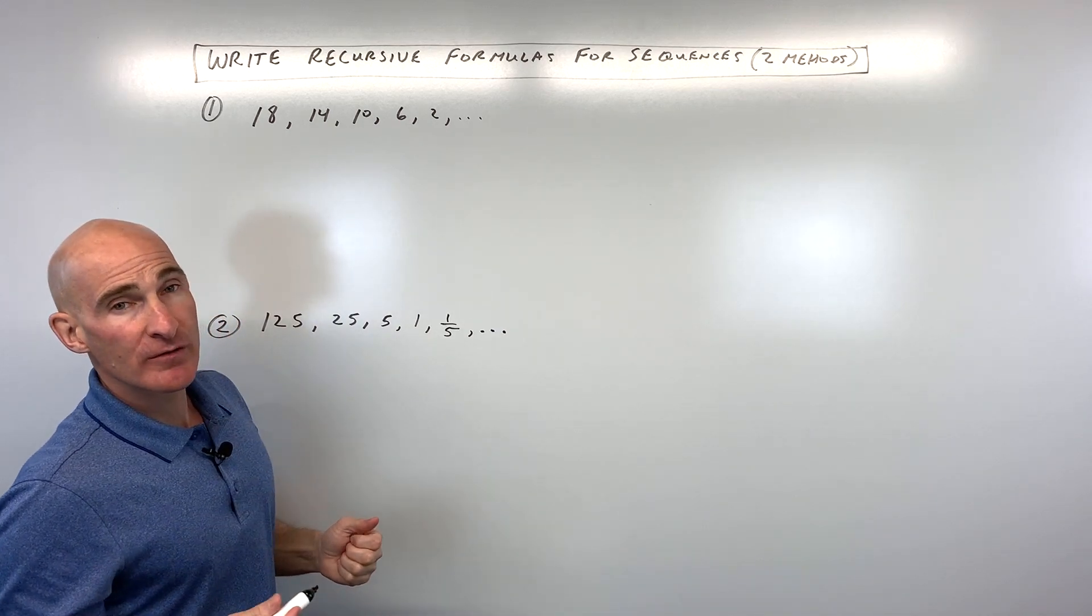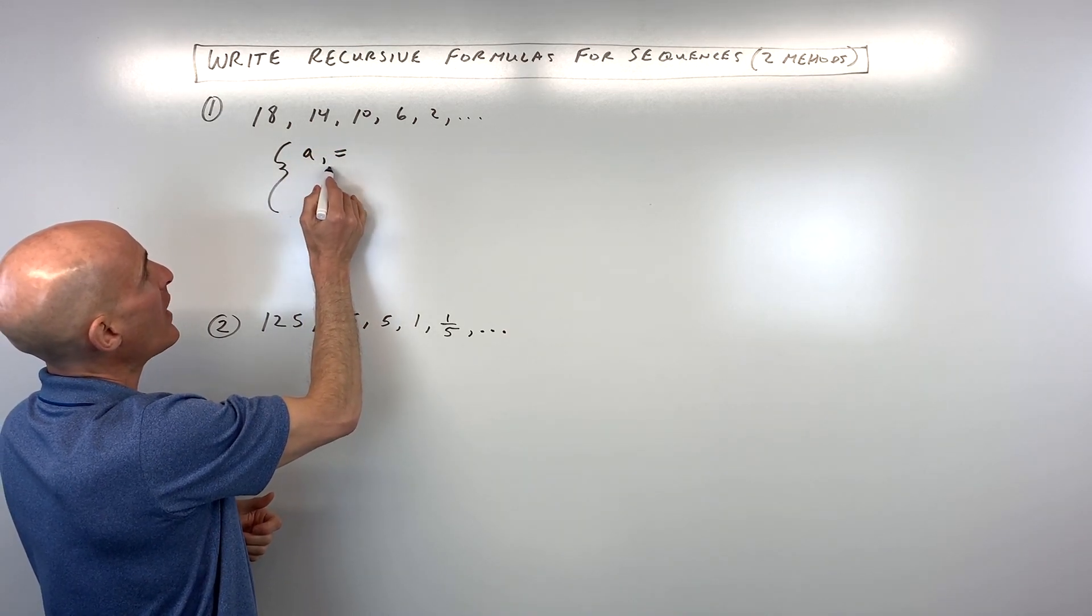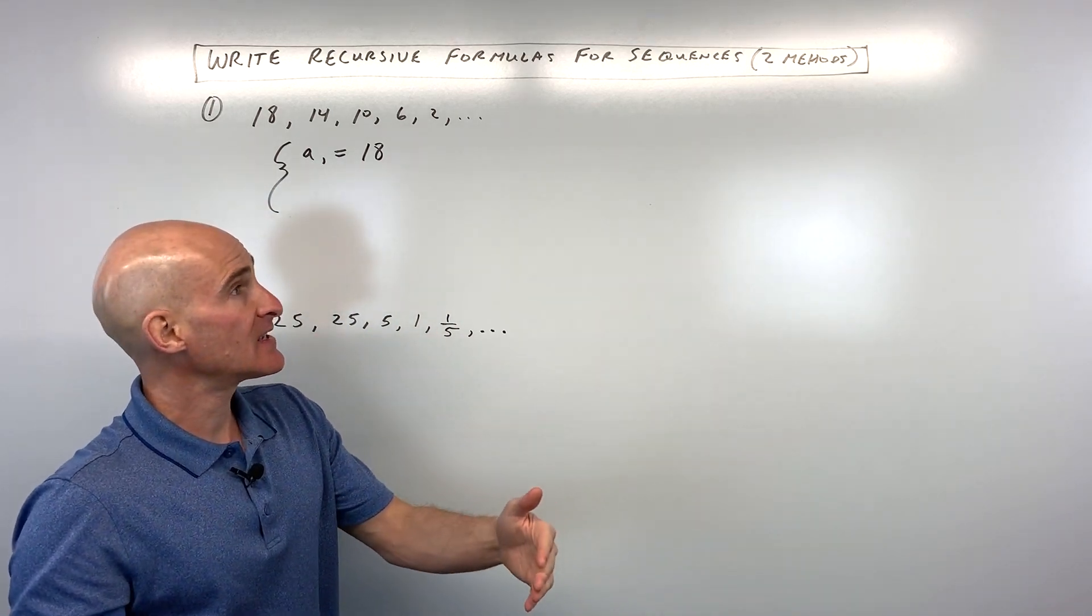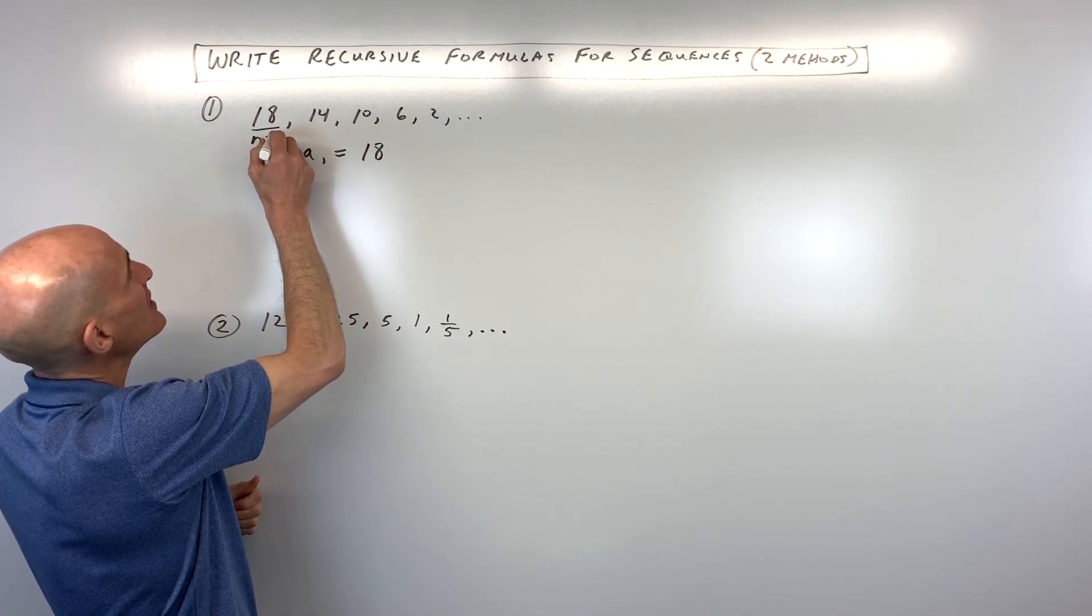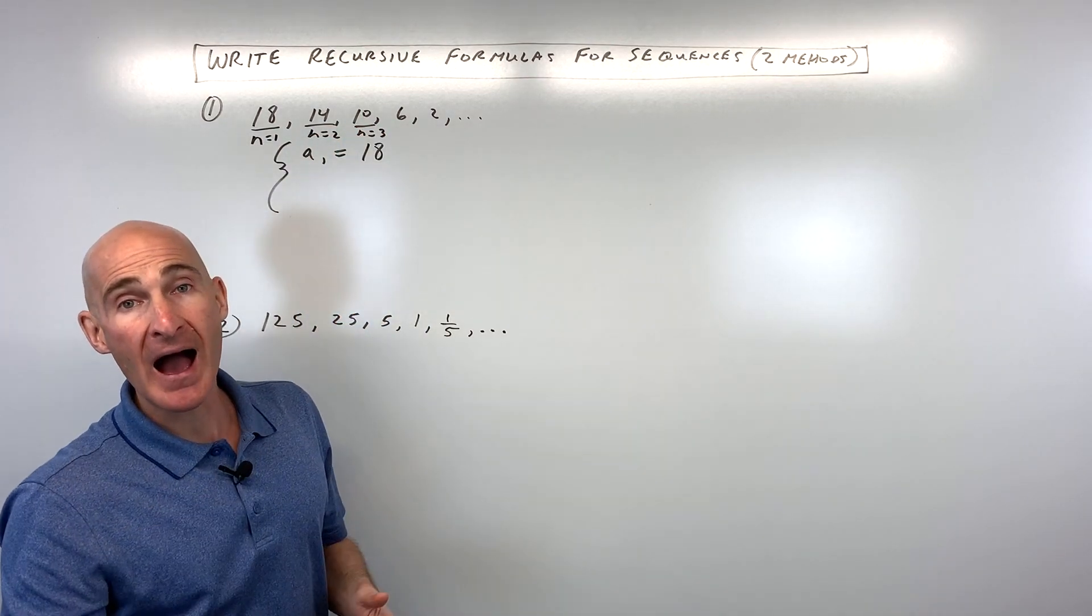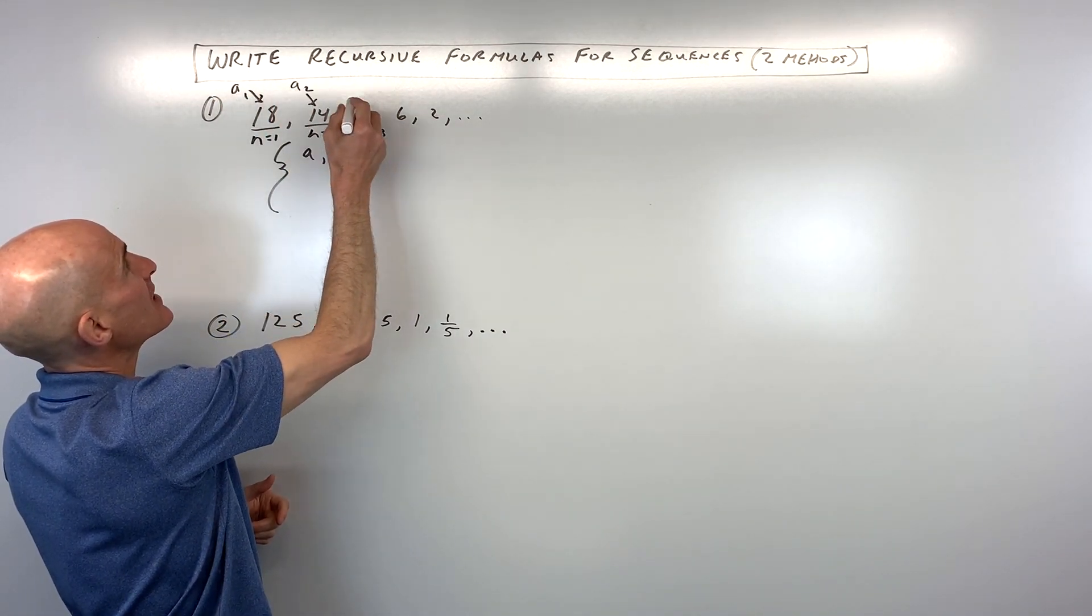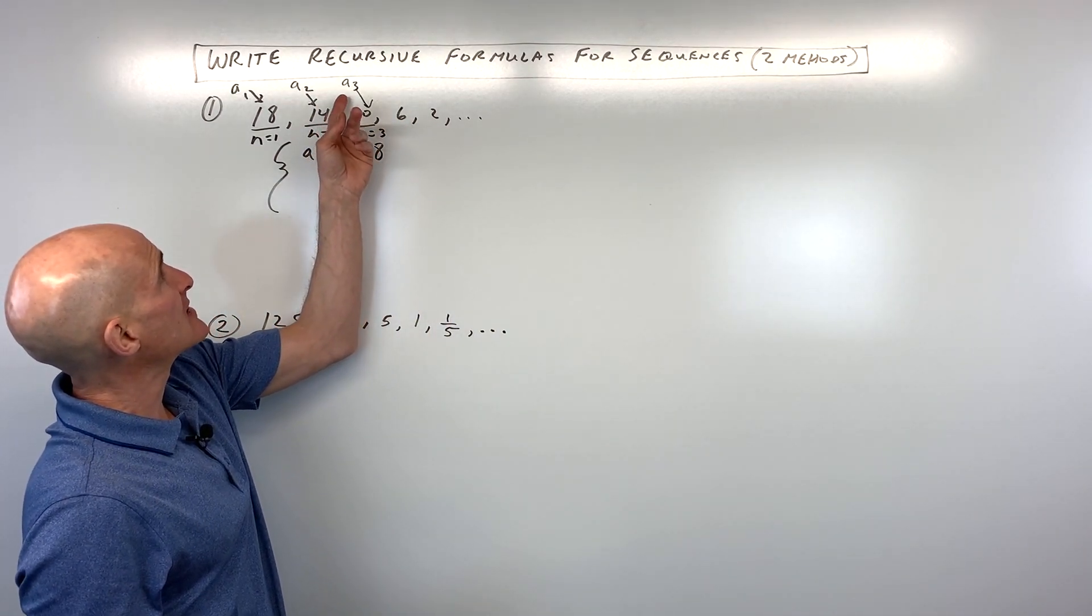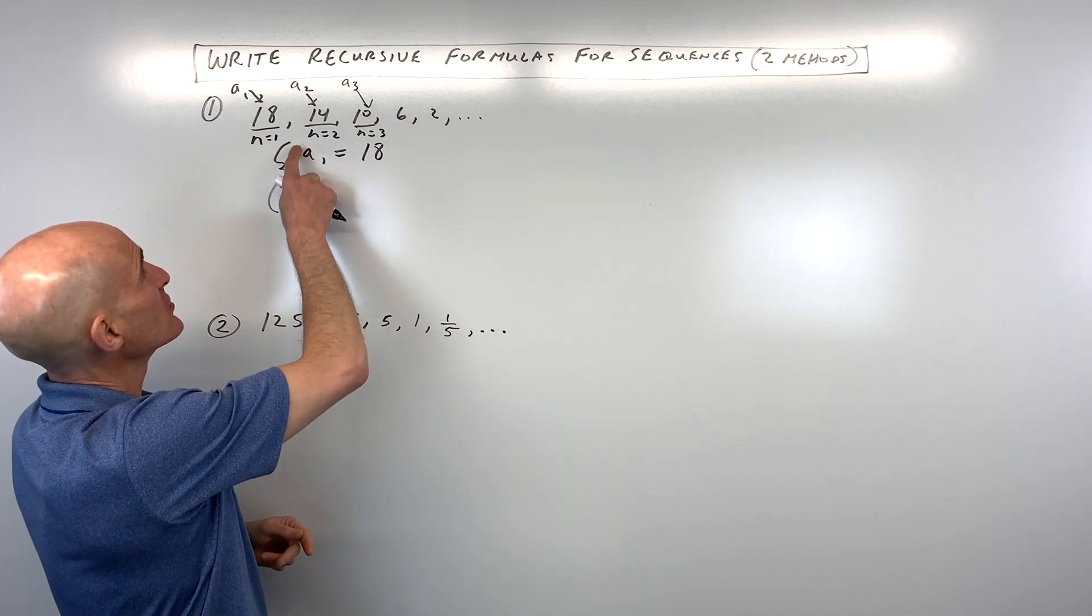So when you write a recursive formula, what you want to do is tell the person what the first term is. So a sub one equals 18, and then you want to give them a rule or an indication of how do you get to that next term. Now, one thing I want to show you really quick is see this notation n equals 1, n equals 2, n equals 3. That tells you what term that you're on, whereas see 18 right here? This is a sub one, or 14 is a sub two. The sub just means subscript, like it's a little bit lower, a little bit below the line. And so that tells you what's the value of that third term. Oh, it's 10. What's the value of that fourth term? It's 6. But n is really just what term you're on.